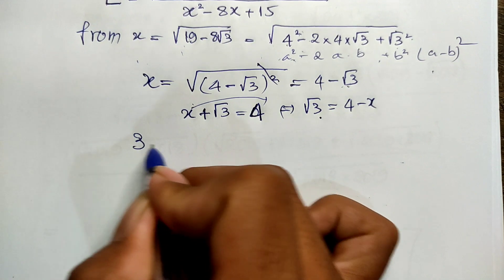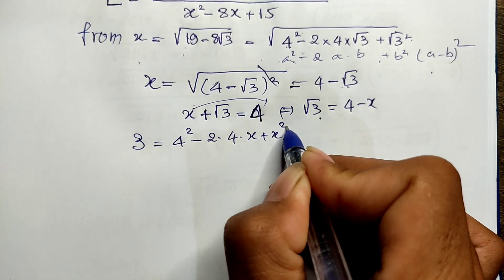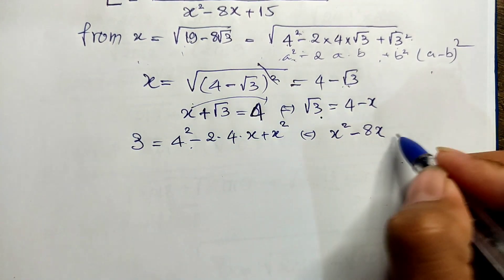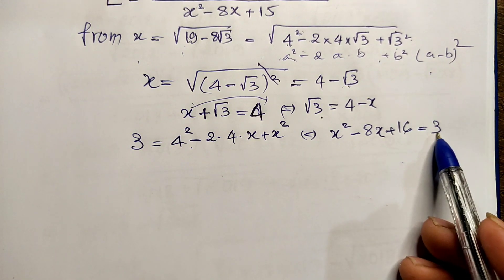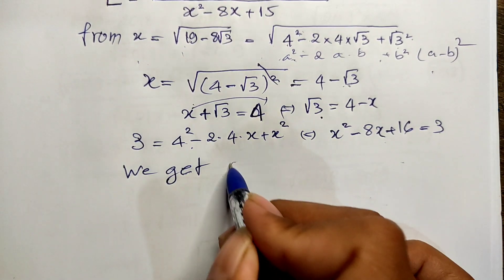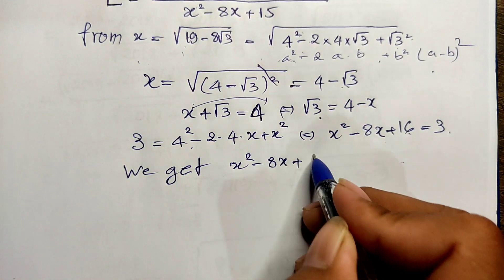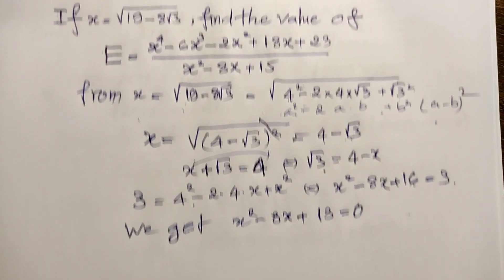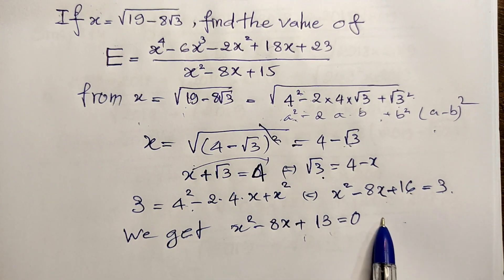Squaring both sides gives: 3 equals (4 minus x) squared equals 16 minus 8x plus x². So x² minus 8x plus 16 equals 3. Moving 3 to the left side, we get x² minus 8x plus 16 minus 3 equals 0, which gives us x² minus 8x plus 13 equals 0.